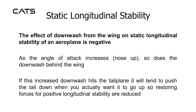Static longitudinal stability: The effect of downwash from the wing on static longitudinal stability of an aircraft is negative. As the angle of attack increases nose up, so does the downwash behind the wing. If this increased downwash hits the tail plane, it will tend to push the tail down when you actually want it to go up, so restoring forces for positive longitudinal stability are reduced.